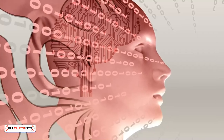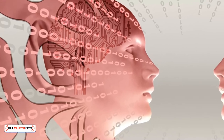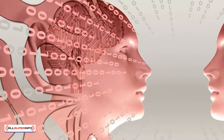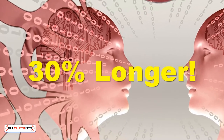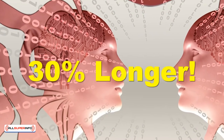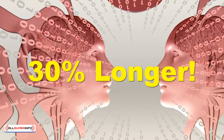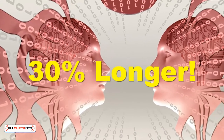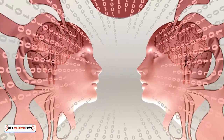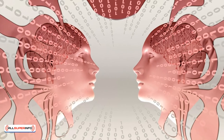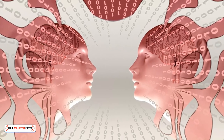Our brains are designed to only focus on one task at a time. When we try to focus on two tasks simultaneously, it takes us 30% longer to complete the tasks, and we end up making more errors. To combat this issue, here are four easy strategies to reduce information overload.